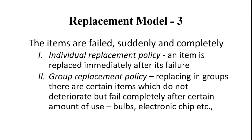Replacement Model 3 deals with items that fail suddenly and completely. It has two types: individual replacement policy and group replacement policy. Under individual replacement policy, an item is replaced immediately after its failure. Under group replacement policy, items are replaced in groups — certain items do not deteriorate but fail completely after a certain amount of use. The best examples are electronic bulbs and electronic chips.